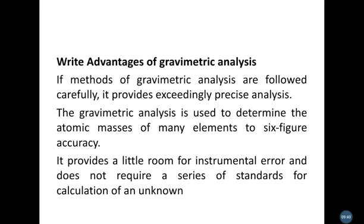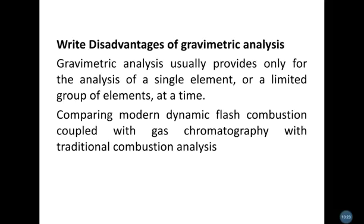Gravimetric analysis has several advantages. It is used to determine the atomic mass of many elements to six-digit accuracy. It provides the atomic mass of identified elements with a certain level of instrument error, but errors do not accumulate repetitiously. It is also very good for calculating results from unknown samples.